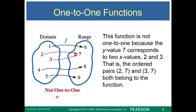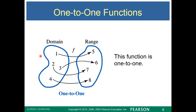If you look at this function, this is not a one-to-one function, even though it's a function. It's okay for two to go to seven and three to go to seven, but it's not a one-to-one function because these two numbers go to the same number. Every y value, if it's to be one-to-one, can only have one x value. So every number in the domain maps to only one element in the range, and only one element in the range has exactly one element in the domain.